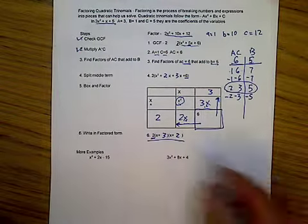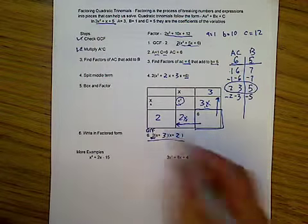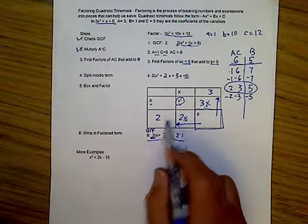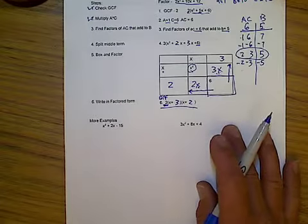And there I am in my factored form. I have my greatest common factor out here, GCF, sitting out there. And then my two factors that I find from my box. Alright. Let's do another example just below here. And we'll go through all these steps again.